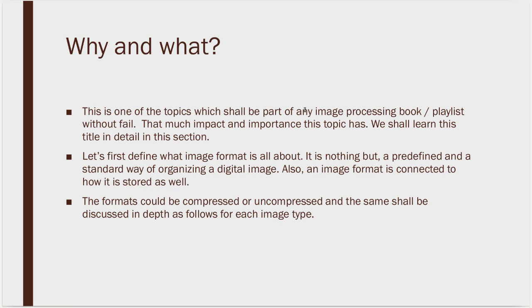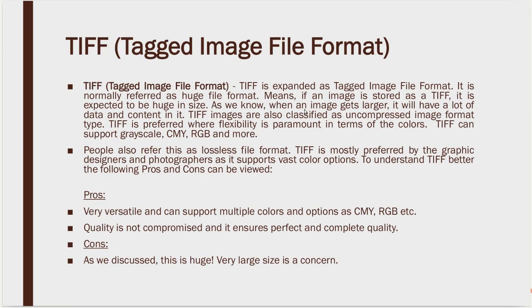Some images are compressed type and some images are non-compressed type, and we are going to see the benefits and disadvantages of each. The first type we are going to see is Tagged Image File Format, which is called TIFF. It is normally referred to as a huge file format because it is very large in size, and it is also called an uncompressed image format — it is very huge because it has all the information.